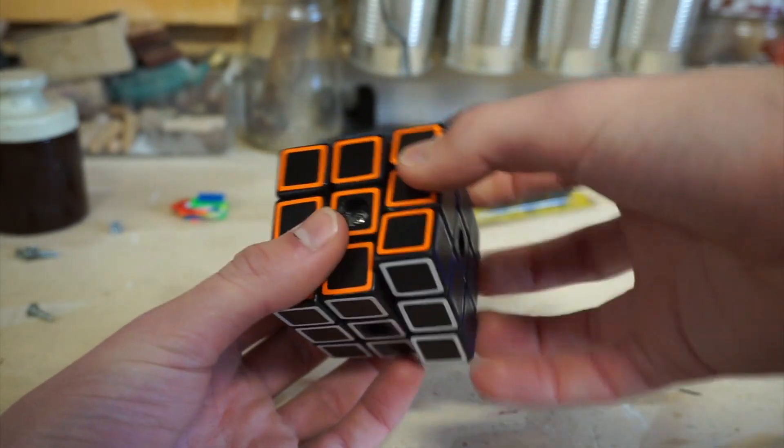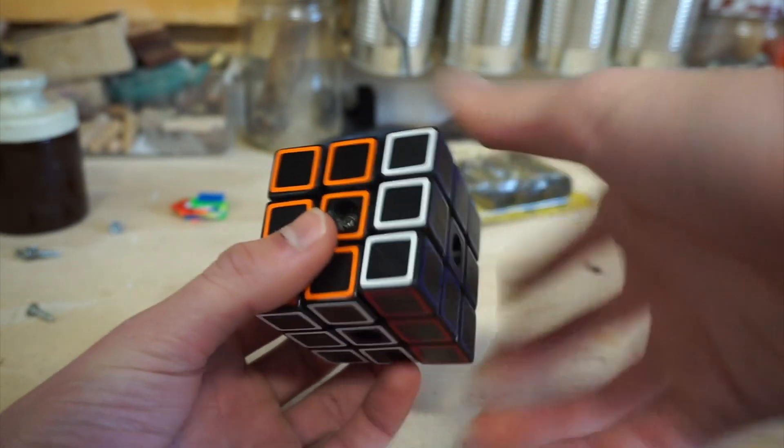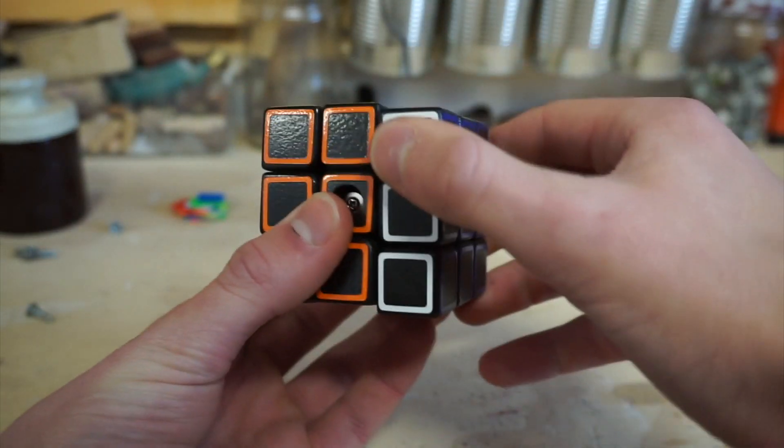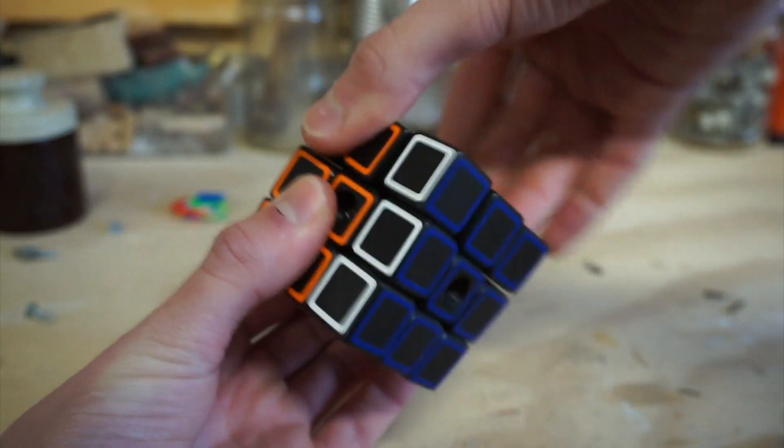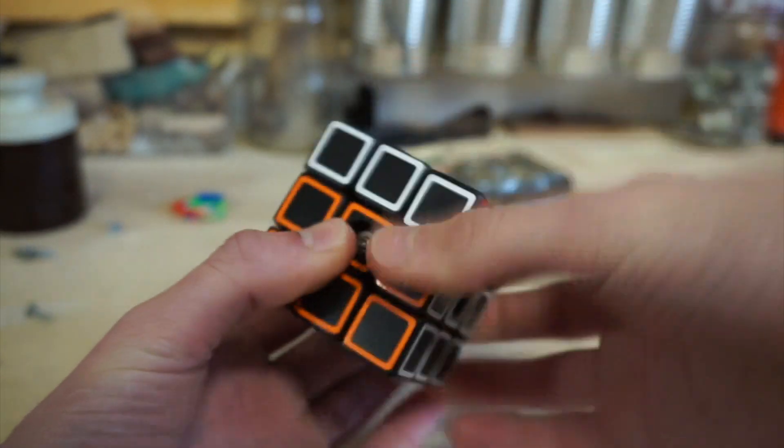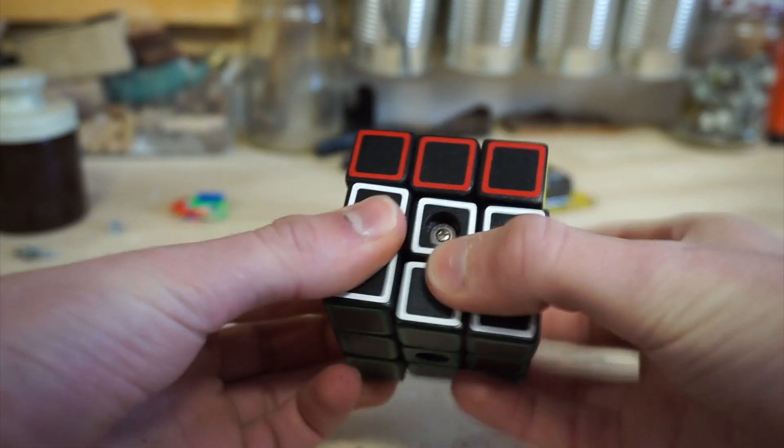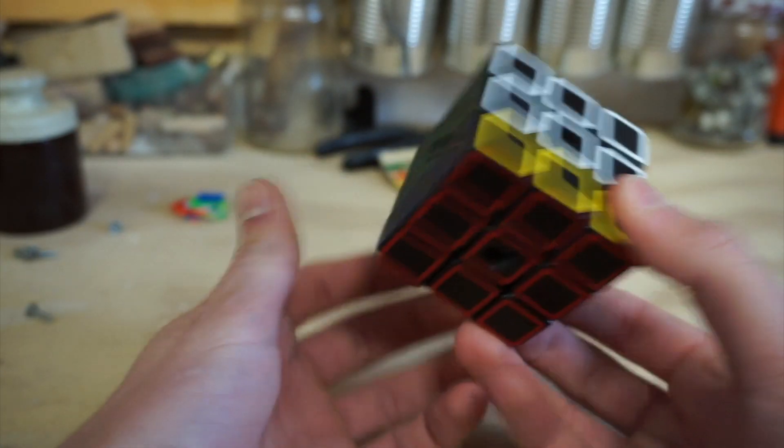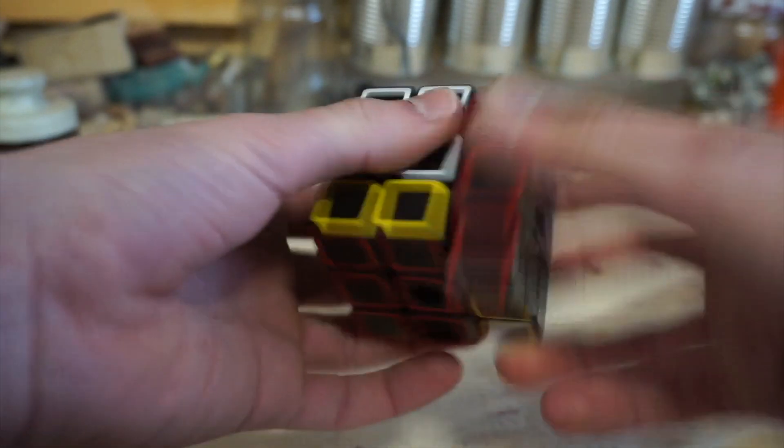I can show you - it turns like a regular 3x3 would. You can turn here, but sometimes when you make a turn, the turn is blocked. You can see I can't make that turn, can't make that turn, can't make that turn. So there is some method to the madness.